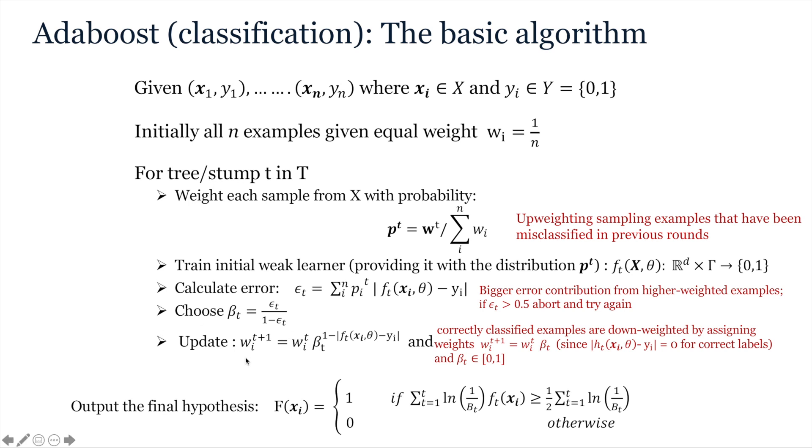Note, this then has the effect of indirectly up-weighting misclassified examples in the next round, because the probability distribution is estimated by normalizing over the sum of weights. Finally, then, at the end, the prediction for each example is aggregated from predictions across all of the base learners trained as a weighted majority vote.